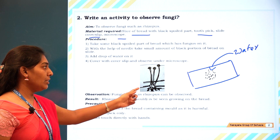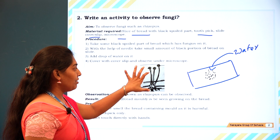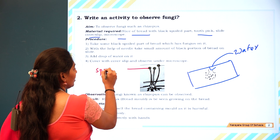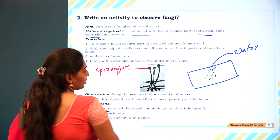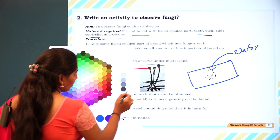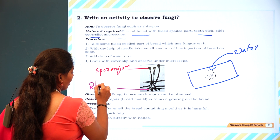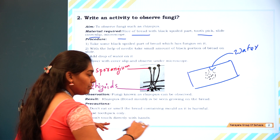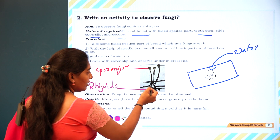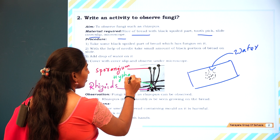When observing under the microscope, you can find the structure of Rhizopus. The knob-like structure is called the sporangium, which bears spores. The root-like structures are called rhizoids, which help the fungus penetrate into the bread. The spreading thread-like parts are called hyphae.